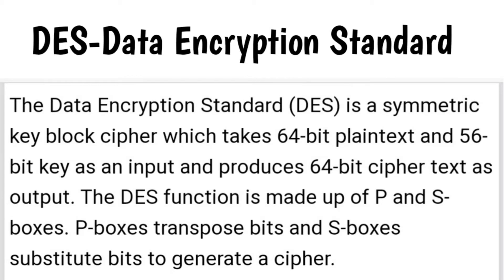The DES function is made up of P-boxes and S-boxes. P-boxes transpose bits and S-boxes substitute bits to generate a cipher.